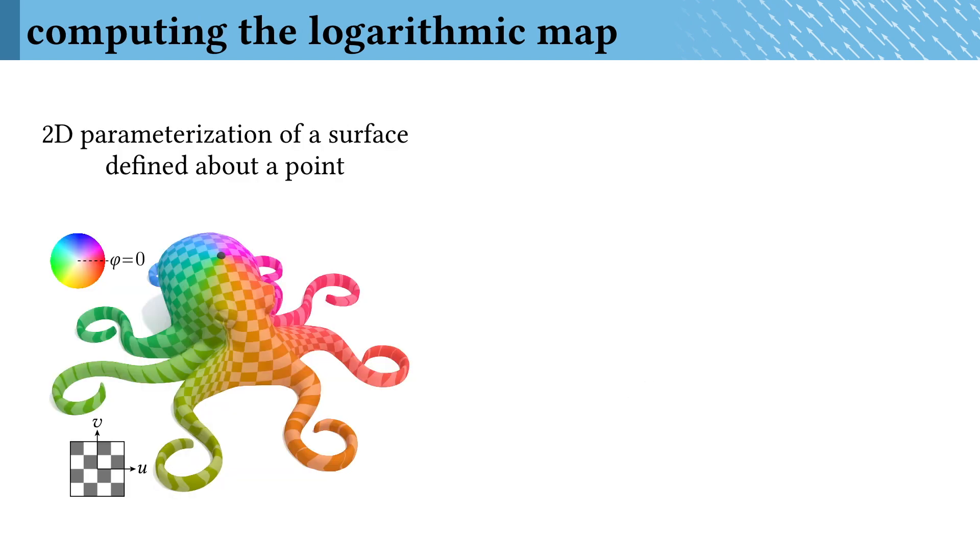So this logarithmic map is then a very special 2D parameterization defined with respect to a given point on a surface. And in fact, the vector heat method will give us all the ingredients we need to compute this map.